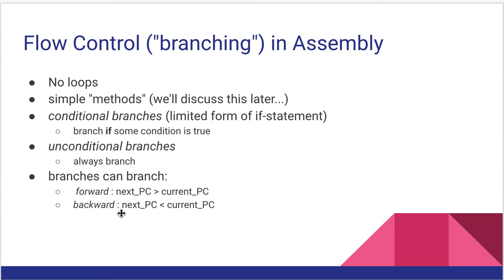We do have some simple methods—they're called subroutines—and we'll talk about those near the end of the semester. We also have conditional branches which are sort of a limited form of the if statement. They're a little more squirrely to put together than an if statement, but we can do that. The idea is that we branch if some condition is true. We also have the notion of unconditional branches where we always branch straight to something that's similar to a go-to in other programming languages.